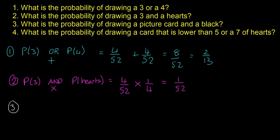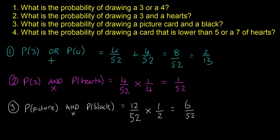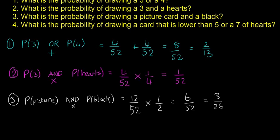Question three. What is the probability of drawing a picture card and a black? So P of picture AND which means multiply P of a black card. P of a picture card, there are 12 picture cards because there's a jack, a queen and a king. And there's four jacks, four queens and four kings. So it's 12 over 52, multiplied by P of black which is going to be half because half of the cards are black. So your answer is going to be 6 over 52, or if you want to simplify that, it's 3 over 26.